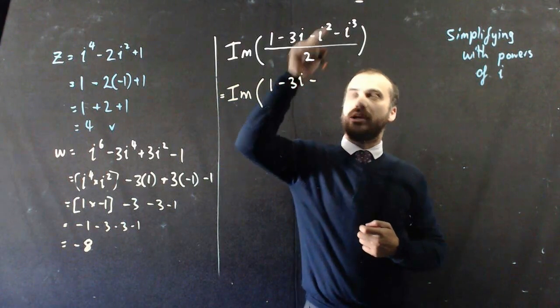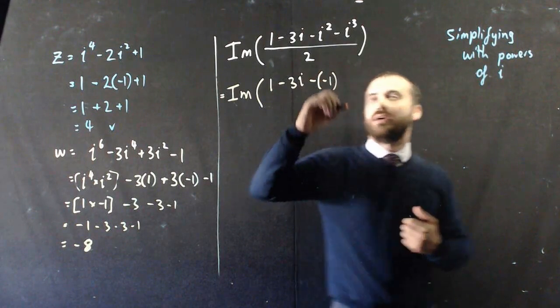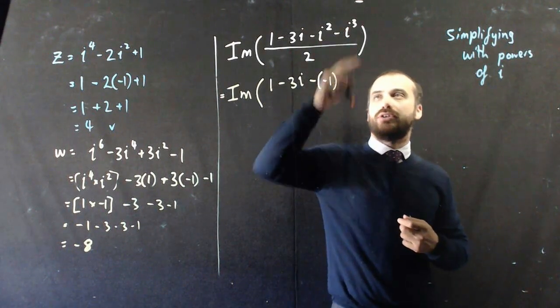Now, negative i squared. Well, i squared is negative 1, so it's negative negative 1. And then negative i cubed. Now, i cubed is negative i, so you have to be really careful here.